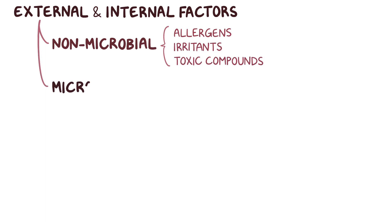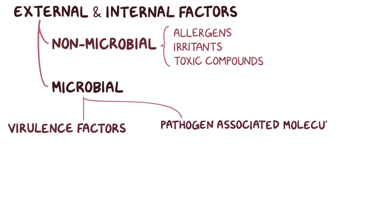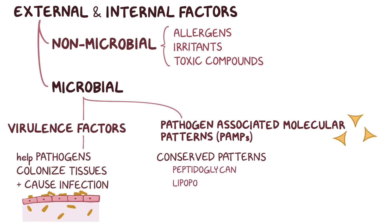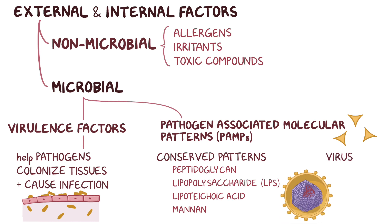The two main microbial factors that trigger inflammation are virulence factors and pathogen-associated molecular patterns, or PAMPs. Virulence factors are molecules that help pathogens colonize tissues and cause infection. PAMPs are small molecules with conserved patterns shared across many different pathogens, including bacterial wall components like peptidoglycan, lipopolysaccharide or LPS, and lipoteichoic acid, and fungal wall components like mannan. For intracellular pathogens like viruses, PAMPs might include the viral RNA or DNA.